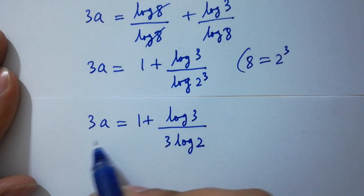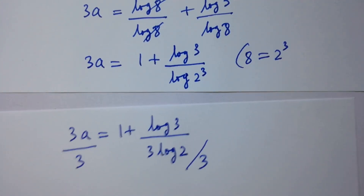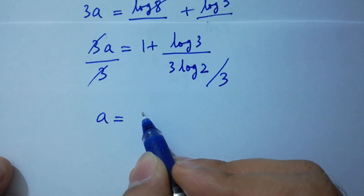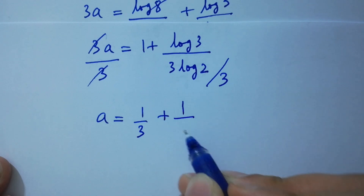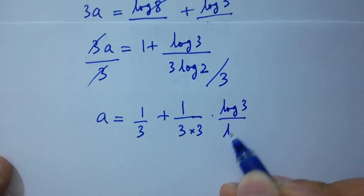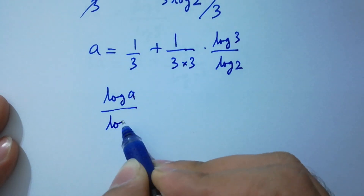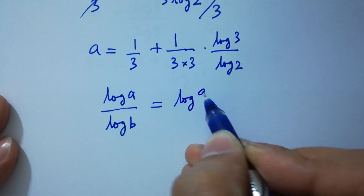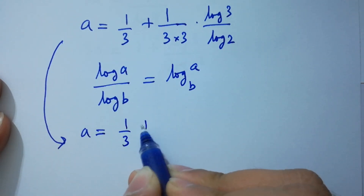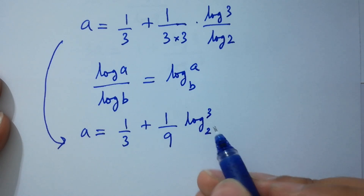Splitting the fraction: 3a equals log 8 over log 8 plus log 3 over log 8, which gives 3a equals 1 plus log 3 over log 2 cubed, since 8 equals 2 cubed. So 3a equals 1 plus log 3 over 3 log 2. Dividing both sides by 3, a equals 1 over 3 plus 1 over 9 times log 3 over log 2. Applying the change-of-base rule, log a over log b equals log a to the base b, we get a equals 1 over 3 plus (1 over 9) log 3 to the base 2, which is the value of a.